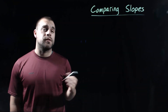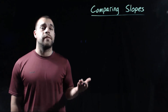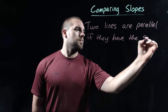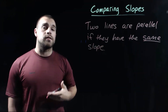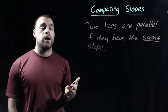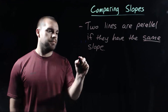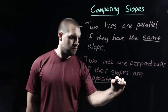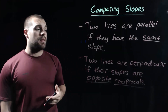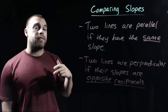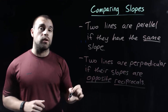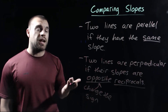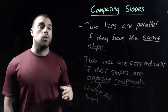Next we're going to be comparing the slopes of two lines to see if they are parallel or perpendicular. Two lines are parallel if they have the exact same slope. Lines that are perpendicular have slopes that are opposite reciprocals. Opposite means we change the sign — if it was positive, we make it negative, and vice versa. Reciprocal means we flip the fraction over.